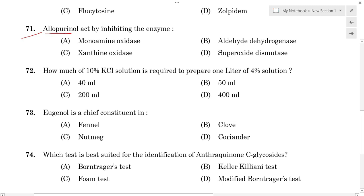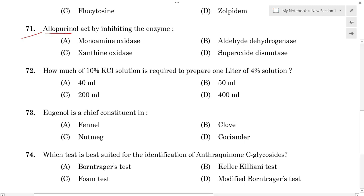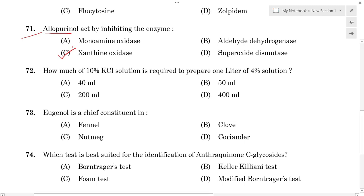Allopurinol is used in chronic gout and hyperuricemia — conditions where uric acid level is very high in the blood. The drug allopurinol inhibits the enzyme xanthine oxidase, which is responsible for uric acid synthesis in our body. So option C, xanthine oxidase, is the correct answer.